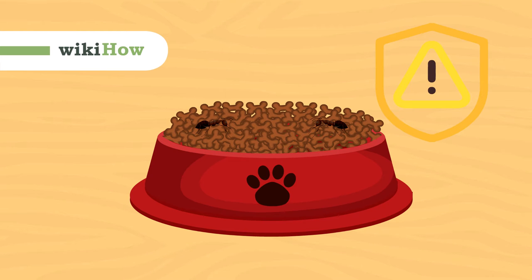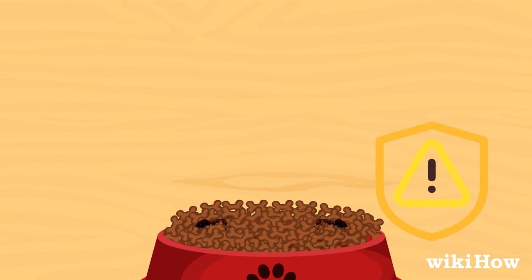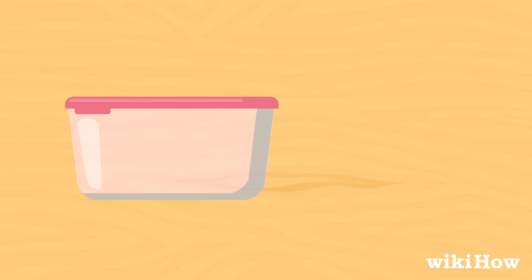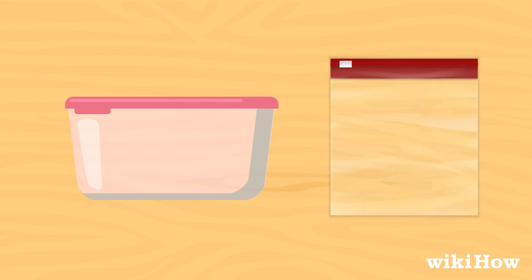To prevent ants from getting into your pet's food, store the food in sealed containers such as plastic bins with lids or sealed zipper top storage bags.